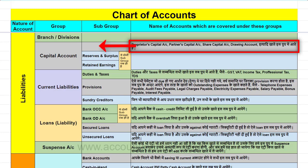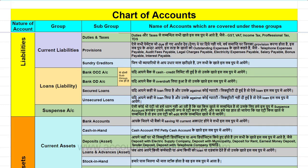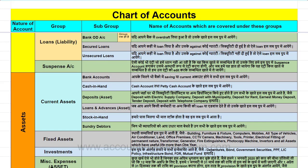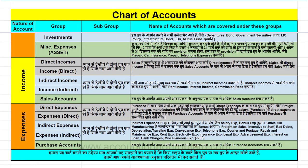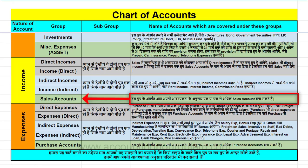व्यापार के स्वामी आदि के खाते capital account group में बनेंगे। जिन भी व्यापारियों से आप उधार माल खरीदते हैं उन सभी के खाते sundry creditors subgroup में बनेंगे। जिनके saving या current accounts हैं, सभी bank accounts एक subgroup में बनेंगे। Building, furniture, computers, mobile आदि के खाते fixed assets subgroup में बनेंगे। Sales accounts भी एक subgroup में बनेंगे।